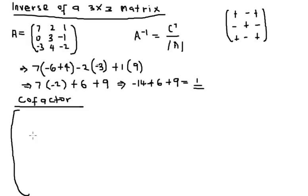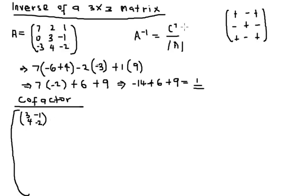For the first cofactor element, we remove the first row and first column. What remains is the 2x2 matrix: 3, minus 1, 4, minus 2. The determinant of that is 3 times minus 2 minus 4 times minus 1, which gives minus 6 plus 4 equals minus 2. The sign here is positive, so C₁₁ = minus 2.